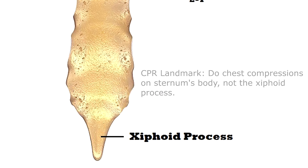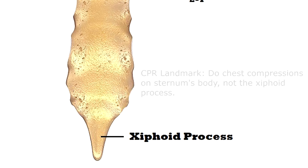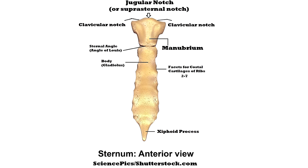The xiphoid process also serves as a very important landmark when performing CPR. Before delivering chest compressions, you need to locate the xiphoid process at the end of the sternum so that you can avoid putting pressure on it. Usually you'll use two fingers placed over the xiphoid process, then your palm goes beside those two fingers, and you actually compress onto the body of the sternum. This is the safest way to perform CPR because the xiphoid process can actually break off and puncture organs.